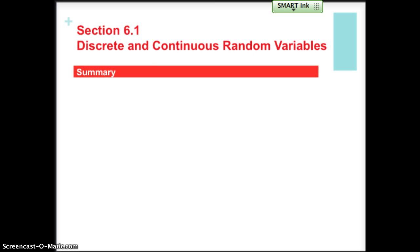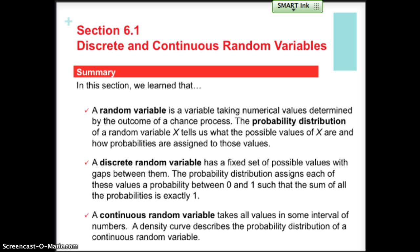That concludes our discussion of Section 6.1. We've learned about random variables and their probability distributions, discussed discrete and continuous random variables, found means as expected values, found variance and standard deviation, and calculated associated probabilities using z-scores for a normal distribution. I hope this helps you understand Section 6.1, and we'll see you back for Section 6.2.